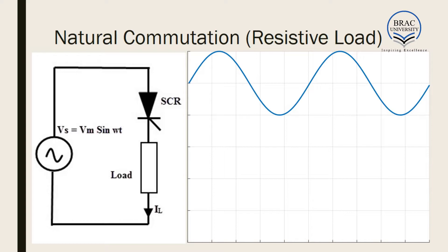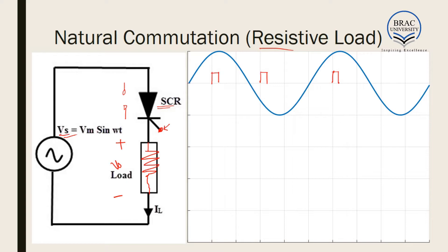Now we are considering natural commutation for a resistive load. It will have an AC voltage source, an SCR switch, and a resistive load. We know how to turn the SCR on — we have to inject some current through the gate. Suppose we are injecting current at three random places in three half cycles. Before any current is injected the SCR is off, meaning it is open circuit, so no current flows. Output voltage across the load V₀ is equal to zero — before any gate pulse is given the output voltage is zero.